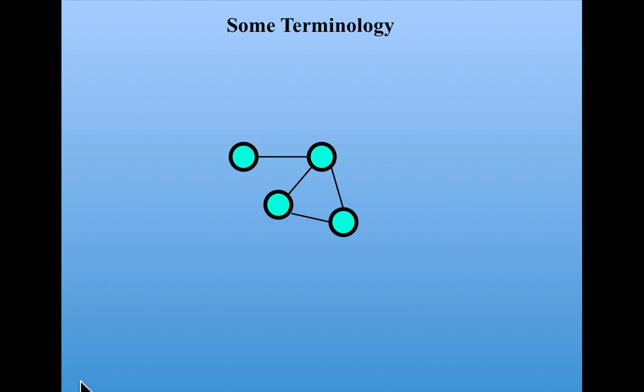In this subunit, we'll go over some of the terminology used in the study of networks. We've already talked about nodes and links. Those are the main components of networks.